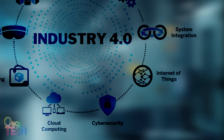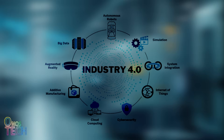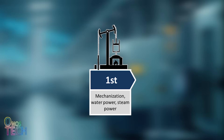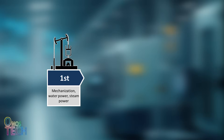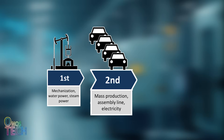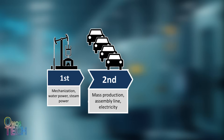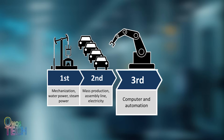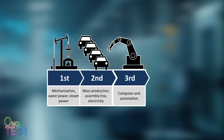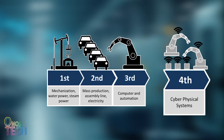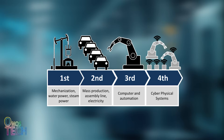Before we dive in, let's zoom out for a moment. The IIoT is part of a big story — the fourth industrial revolution, which is the same as Industry 4.0. Industry 1.0 started with mechanization using steam power. Industry 2.0 brought electricity and assembly lines. Industry 3.0 introduced automation and PLCs. And now, Industry 4.0, where machines, sensors, and data are all connected to make factories smart.